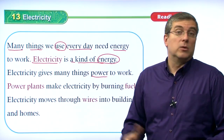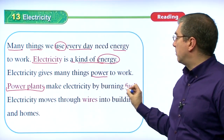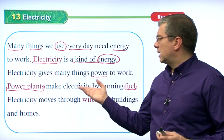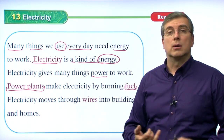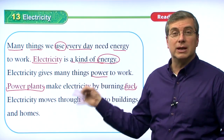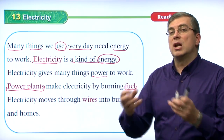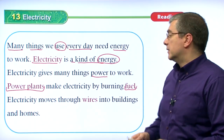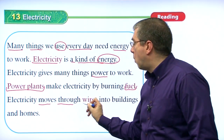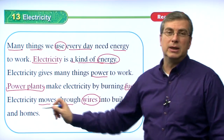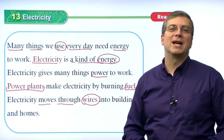Power plants make electricity. Where do we get electricity? We get electricity from power plants. They make electricity by burning fuel. Power plants usually use coal or nuclear power — we saw an example of a nuclear power plant. Power plants need some type of fuel to create or generate electricity. Then, electricity moves through wires into buildings and homes. From the power plant to buildings and homes, we have very long wires going from one place to the other.